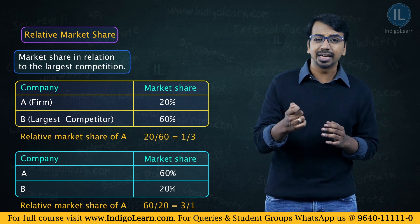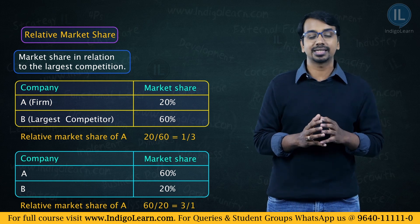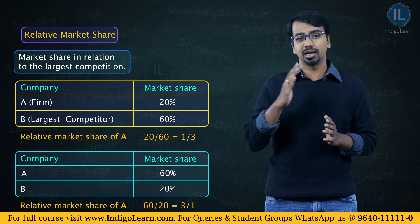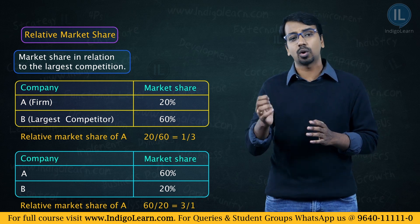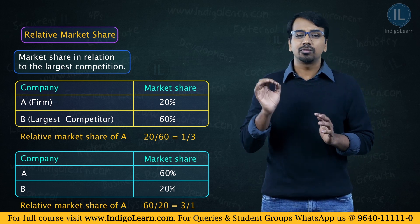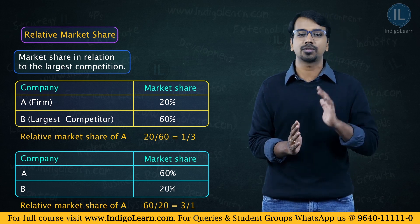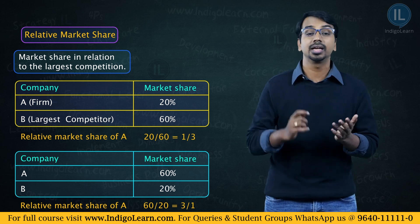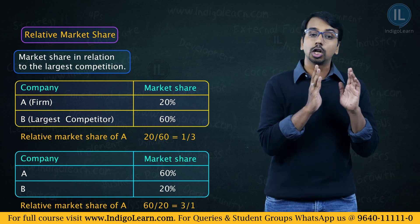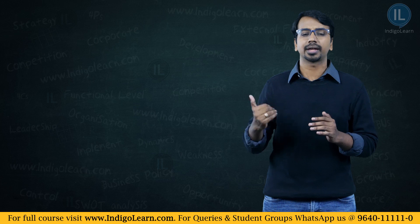If the company we are studying has a market share of 60% and the next largest competitor's market share is 20%, the ratio becomes 60 by 20, which is 3 to 1. If this is a higher number — say 3 to 1 — there we can say it has a relatively high market share. But if it is a lower number, like 1 by 3, it can be considered a relatively lower market share. These numbers are not fixed; they depend from business to business and industry to industry.